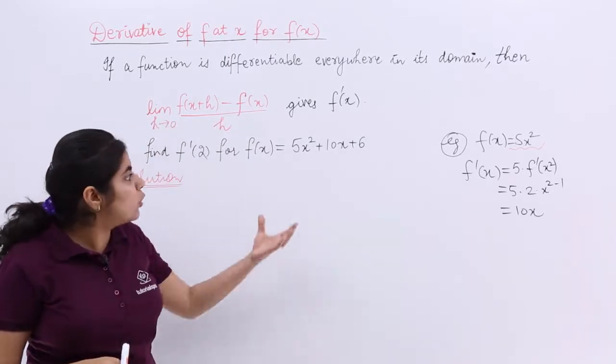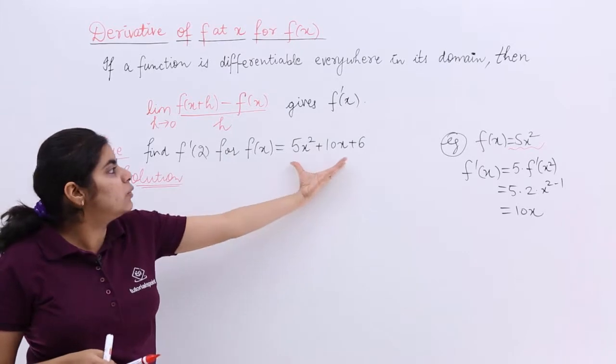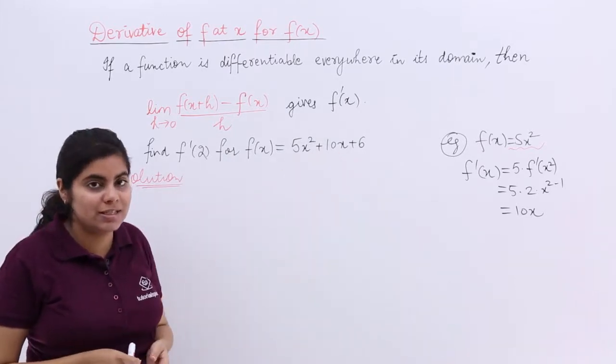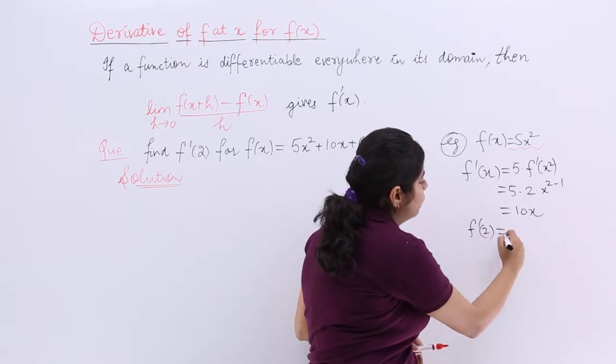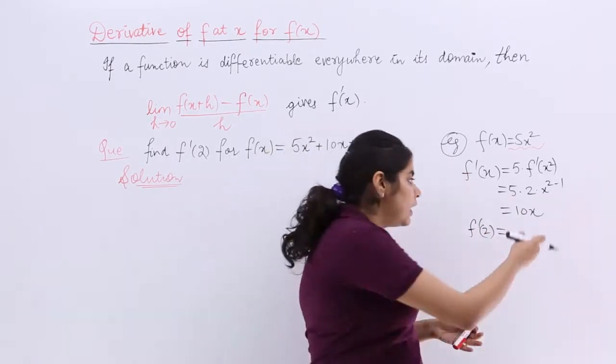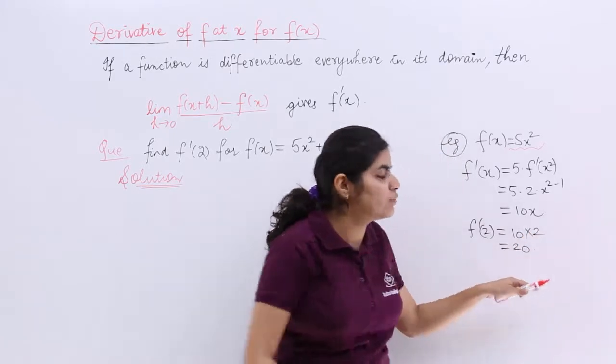We are going to use this formula for a question which says find f dash 2 for f(x) is equal to 5x square plus 10x plus 6. Now even here if somebody told me find f dash 2, what I would do is I would find f dash x. In the result I would use wherever x I would use 2. So my answer was 20.